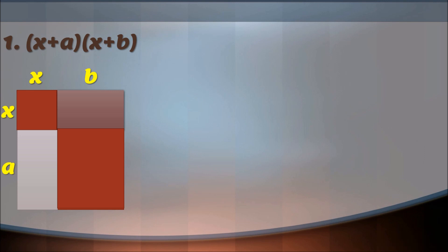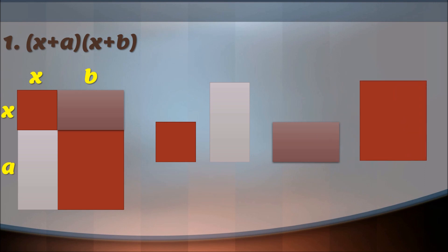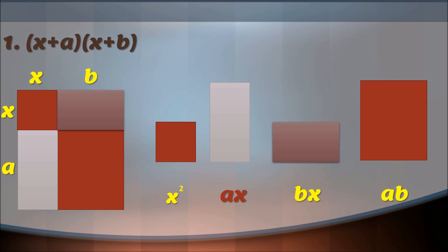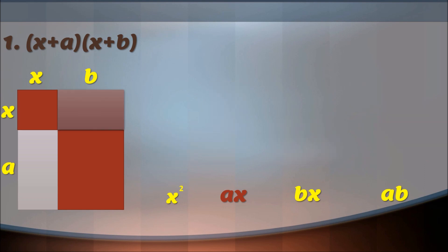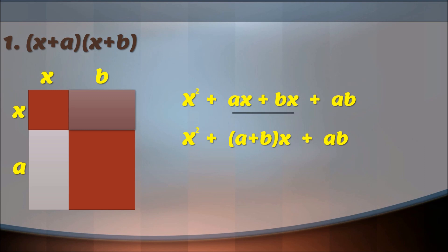Now we will separate all parts of the rectangle to find out the areas. The first figure is a square; the second, third, and fourth figures are rectangles. Area of the first figure is x square, area of the second figure is ax, area of the third one is bx, and area of the last figure is ab. Now we will combine areas of all parts, so it becomes x square plus ax plus bx plus ab. As ax and bx are like terms, we take x outside as a common factor.